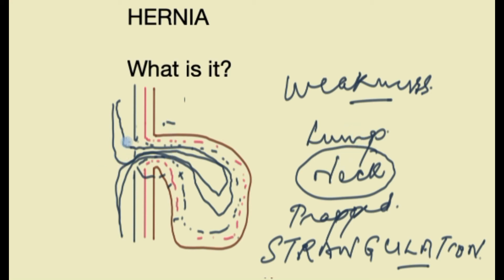Just to recap: hernias occur at points of weakness. The hernia contains all layers of whatever structure has the weakness — in this case, all layers of the abdominal wall. They get thinned out and form a sac, and whatever is inside may then travel into that hernial sac. The danger is at the site of maximum narrowing, which is called the neck of the hernia.